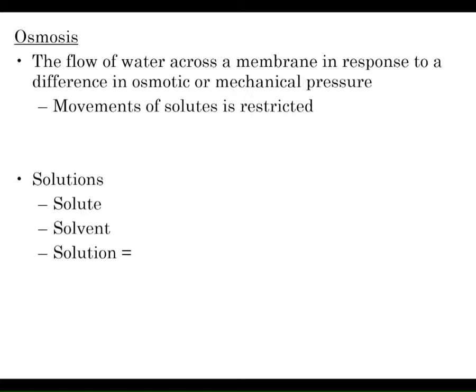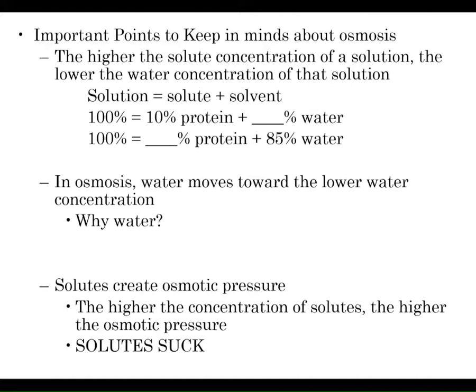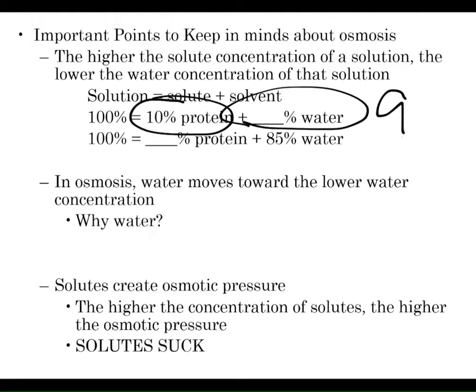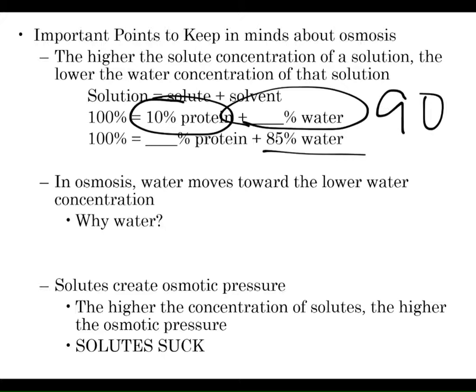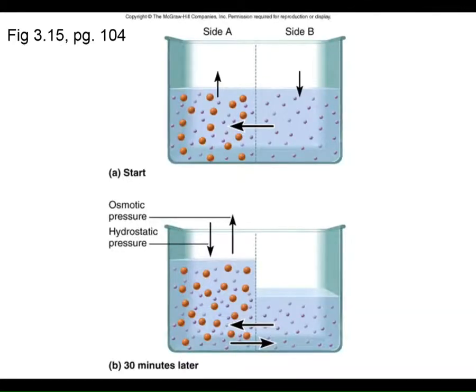Solutes are dissolved in the solvent to make a solution. If a solution is 10% protein, it's essentially 90% water. If a solution is 85% water, it's 15% protein or other solute. In osmosis, we ask: which way will the water move? You'll always get it right if you remember this phrase: solutes suck. Water will always be drawn toward solutes.